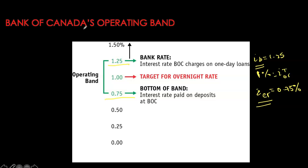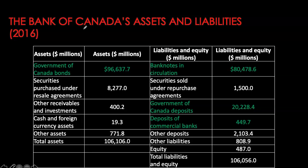All of these roles of the central bank — holding deposits of financial institutions, holding government deposits, and holding securities as assets as collateral for making loans — can be understood by looking at the balance sheet of the Bank of Canada. This is the overall balance sheet as of December 2016. Like any business, the balance sheet has assets on one side and liabilities and equity on the other. The biggest asset is Government of Canada bonds, and the biggest liability is currency in circulation.